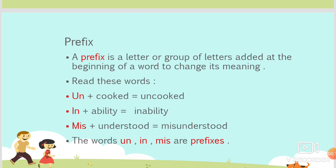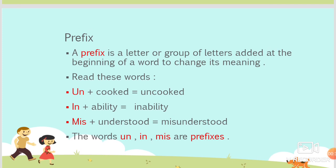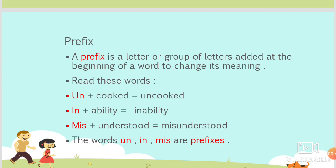What is a prefix in English grammar? A prefix is a letter or group of letters added at the beginning of a word to change its meaning. For example, uncooked, inability, misunderstood. The words un-, in-, and mis- are prefixes. When we add these prefixes to any word, the meaning of the word also changes.